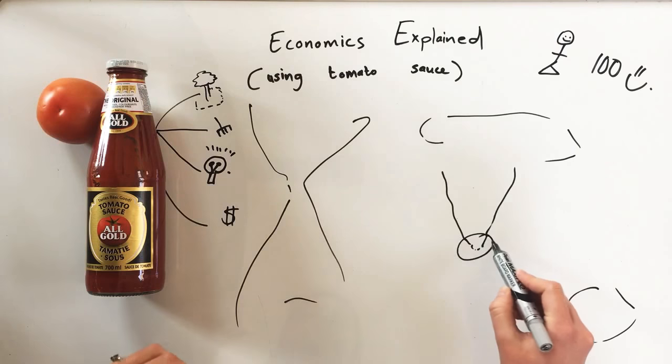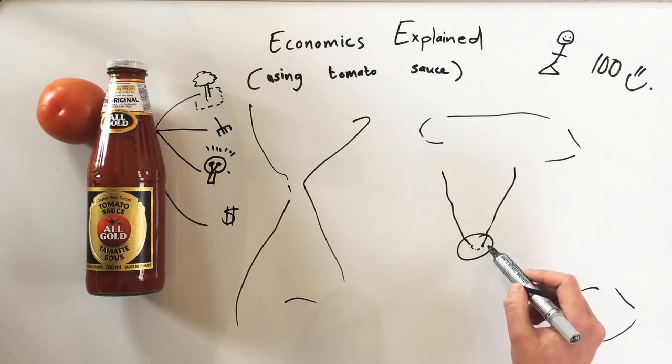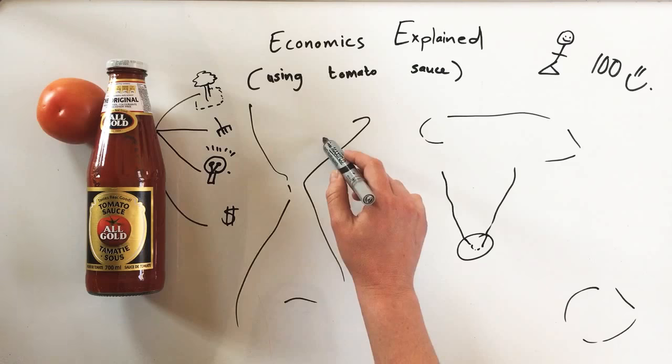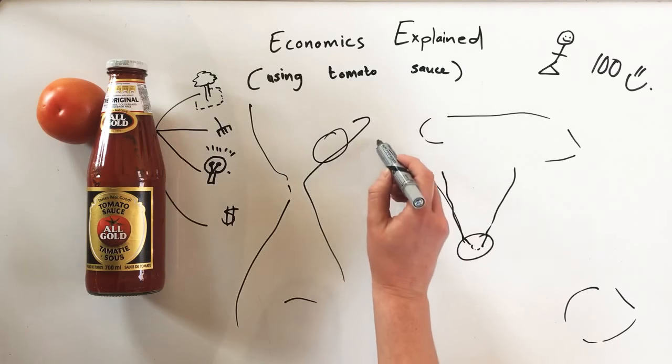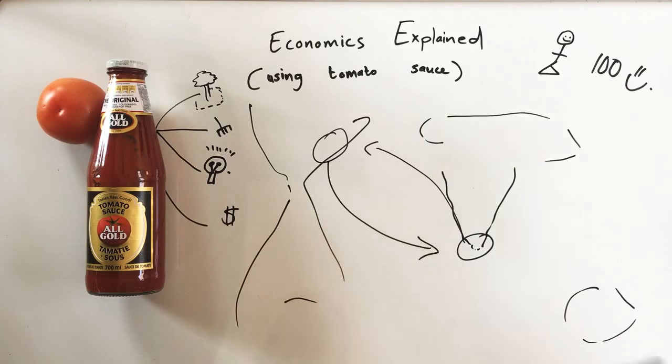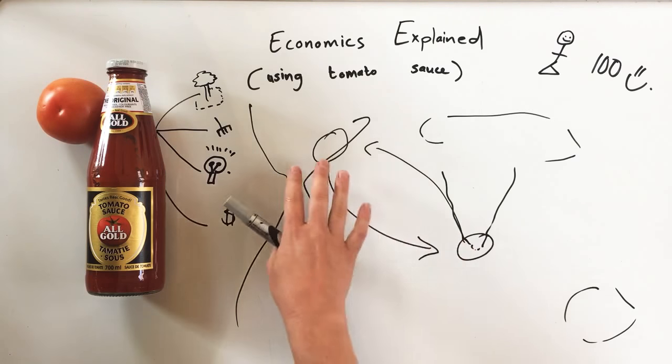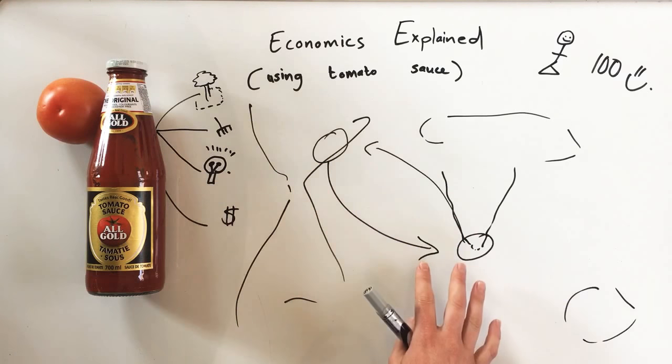So now countries started becoming like the neighbors trading. So South Africa, for example, is very good with, let's say, gold, and America is very good with products that we want to buy. So they started swapping with each other, and this is like the two neighbors, except now it's countries having absolute advantages and countries swapping things. And this big picture over here is called macroeconomics.